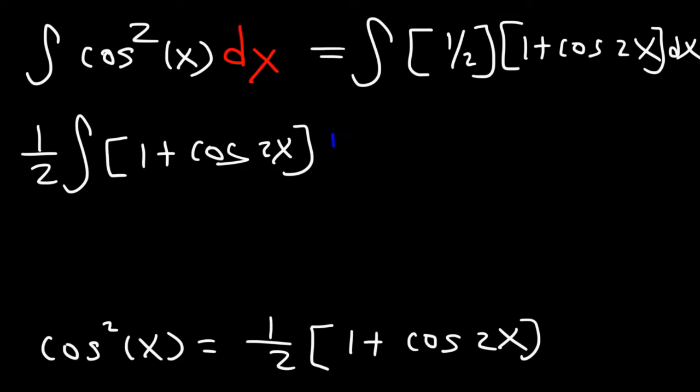Now what is the integral of 1? The integral of 1 is x, and the integral of cosine is sine, because the derivative of sine is cosine. So we're gonna have sine 2x and then divided by the derivative of 2x...